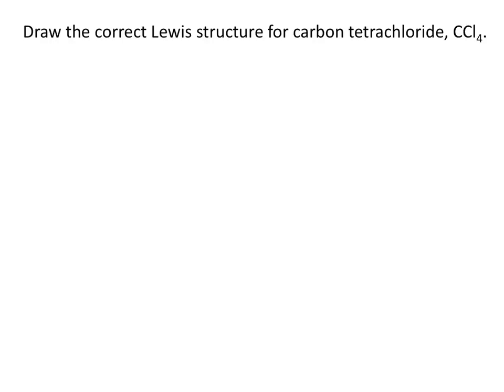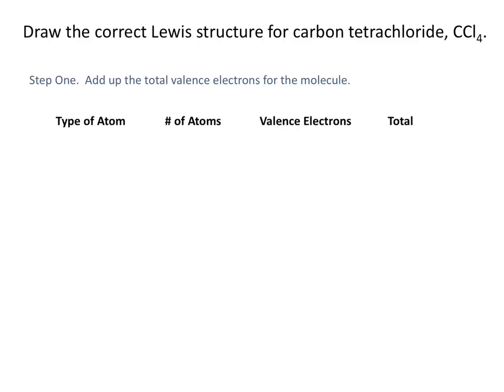Let's draw the correct Lewis structure for carbon tetrachloride, CCl4. The first thing we're going to do is add up the total number of valence electrons by looking at the group number for each atom on the periodic table. It can be handy to set up a chart to keep track, with columns for the type of atom, the number of atoms of that type in the molecule, the number of valence electrons each has, and the total valence electrons contributed. We have two types of atoms in CCl4: carbon and chlorine.